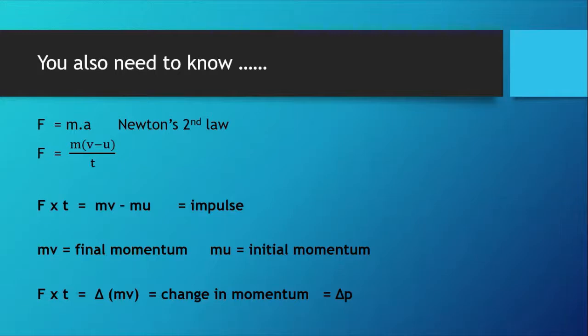With a little bit of rearrangement, force times time equals delta mv, which is a change in momentum and that equals delta p. P is a symbol that's very often used for momentum in physics.